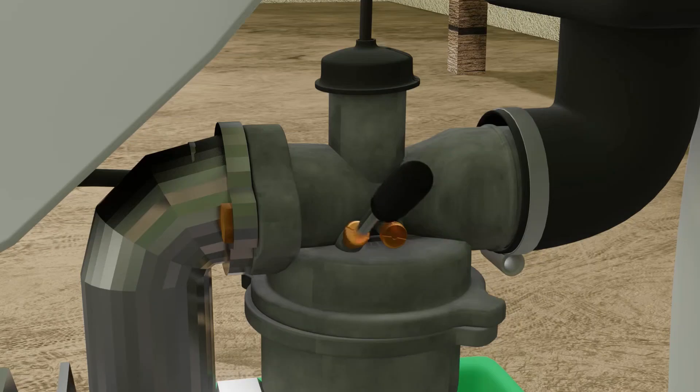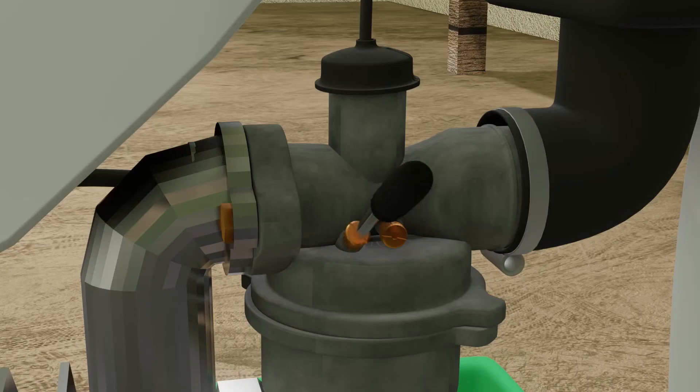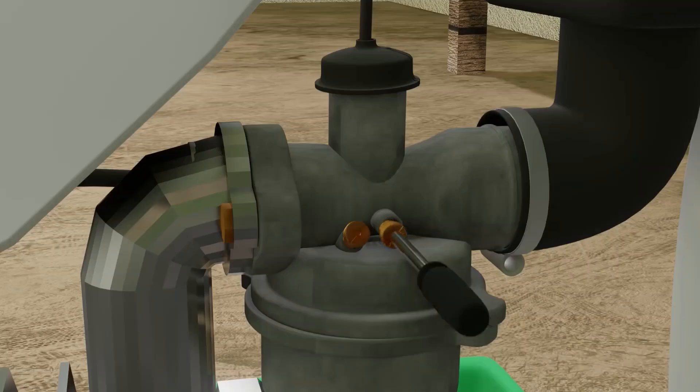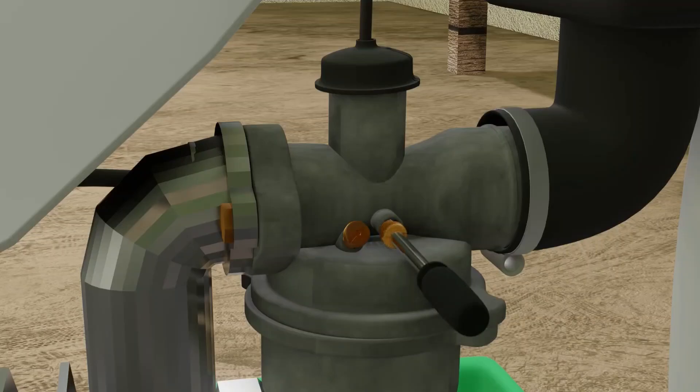This will increase the engine RPM. Then tighten the screw at the back until it stops. This will decrease the engine RPM. After that, open the screw in the back again about 1.5 turns. After that, loosen the screw in the front again until the RPM drops. Here you are free to set the ideal RPM.